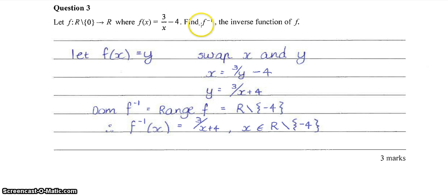Now be careful because we've been asked to find the inverse function. Because we've been asked to define a function, we need to include its domain. So the domain of the inverse function is the range of the original function, which is all real numbers except for negative 4. So if we define our inverse function here, f to the negative 1 of x is equal to 3 on x plus 4, where x is an element of all real numbers except for negative 4. And then we've answered the question.